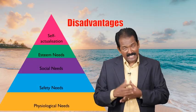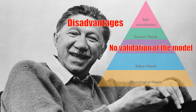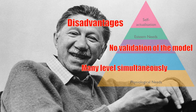Now let us discuss the disadvantages or demerits of Maslow's theory. The first one is there is no validation of the model, because Maslow looked at the biographies or writings of 18 eminent personalities and identified them as self-actualized. The method is extremely subjective as it is based entirely on the opinion of the researcher, so we cannot call it a validated model. The second demerit is that the model assumes people are always present on one level, but needs operate on many levels simultaneously. Maslow says one level must be completed before going to another, but in practice that may not be the case.